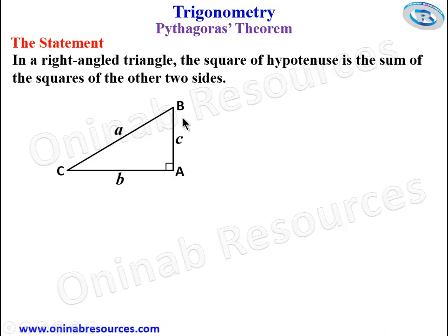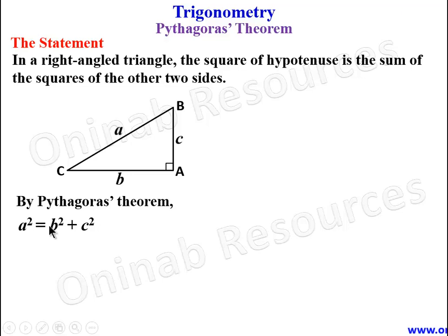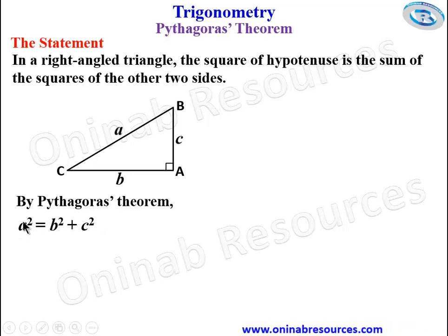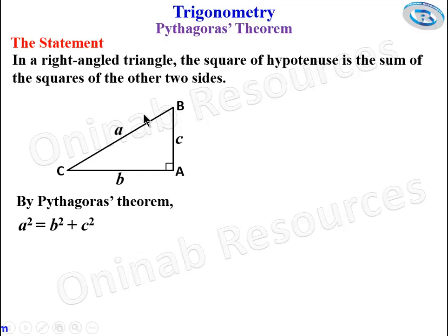So from this right-angled triangle, by Pythagoras' theorem, we have A squared — which is the hypotenuse — is equal to the sum of the squares of the other two sides. So we have A squared is equal to B squared plus C squared. Then we shall be using this Pythagoras' theorem to solve some problems.